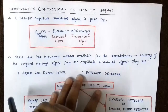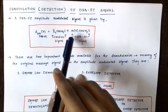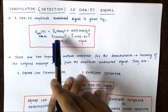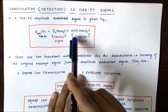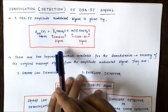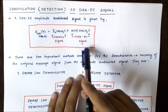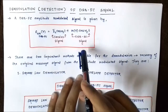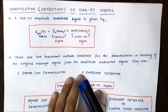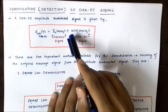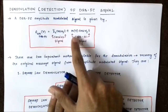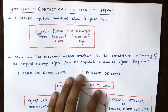We know that a double sideband full carrier amplitude modulated signal is given by the standard expression: Ec·cos(ωct), which is the carrier signal part which is not suppressed, and a double sideband suppressed carrier signal consisting of the lower and the upper sideband. In the demodulation process, our main aim and objective is to extract the message signal m(t) from this double sideband full carrier signal.